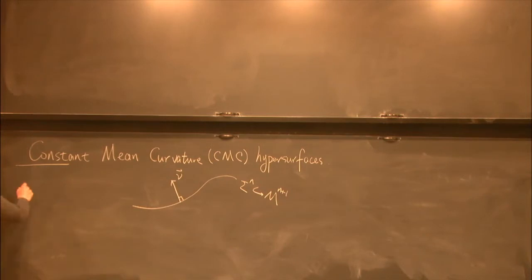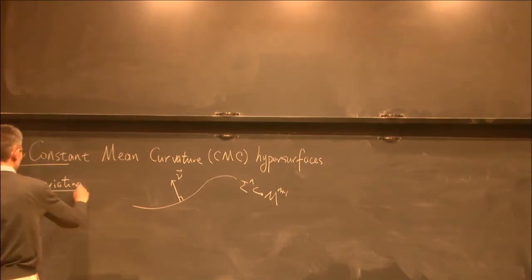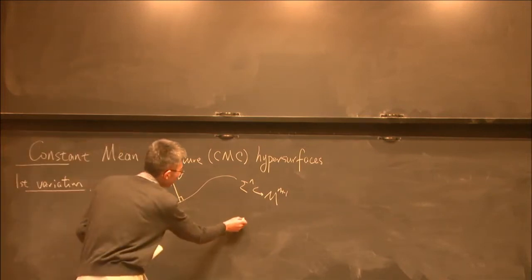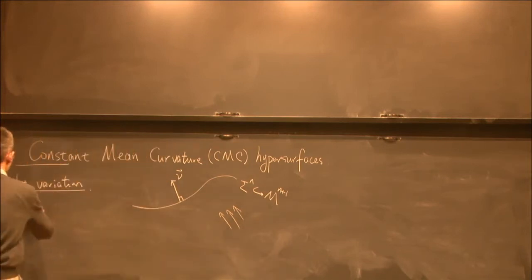The basic first variation formula says that if we move this hypersurface by some ambient deformations, say if you have a flow which is denoted by phi t, from the ambient space to the ambient space.